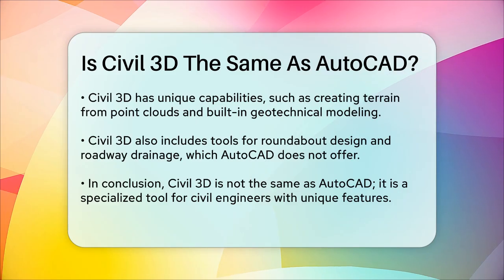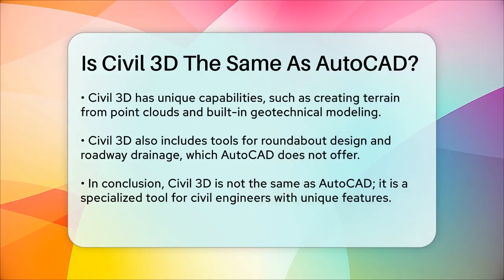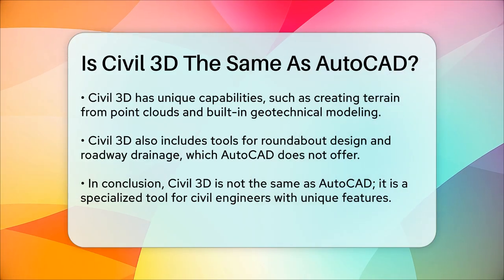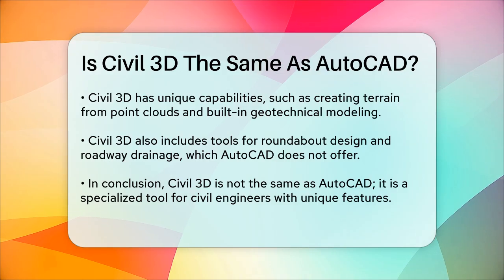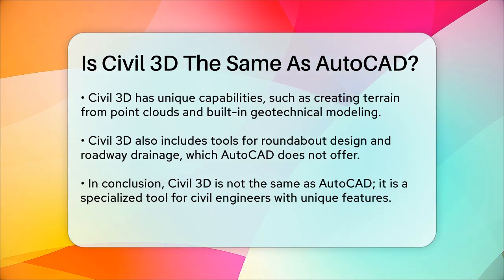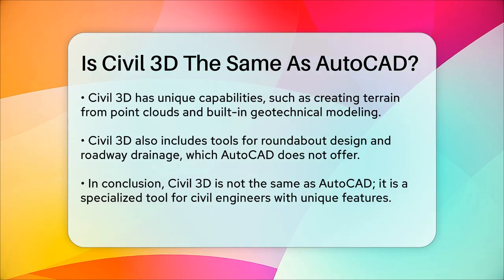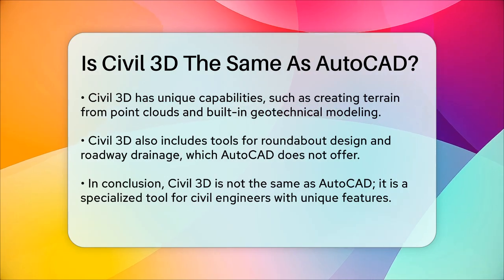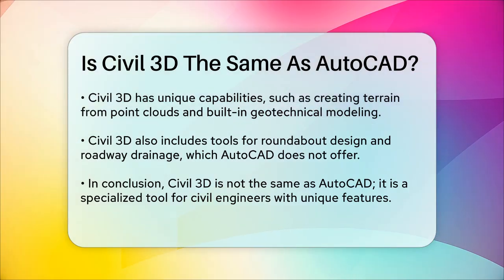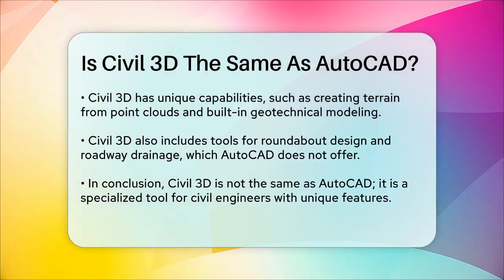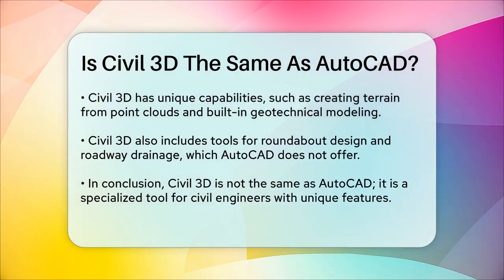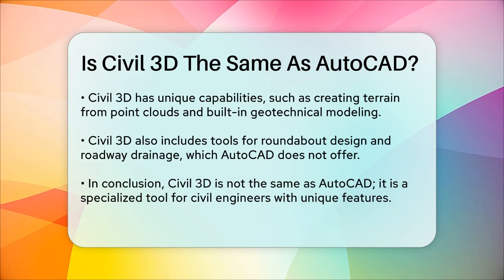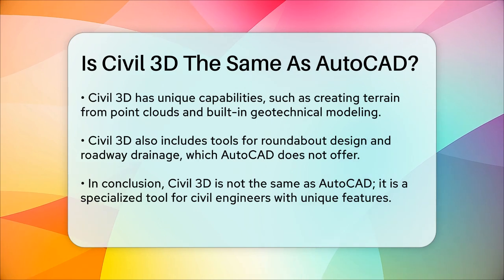However, when it comes to specific tasks like creating a terrain from point clouds, only Civil 3D provides this capability. Additionally, Civil 3D has a built-in geotechnical modeler and tools for roundabout design and roadway drainage, which are not available in AutoCAD.